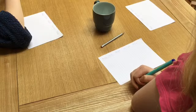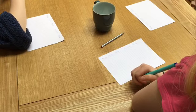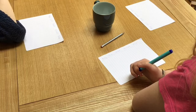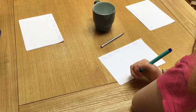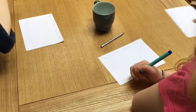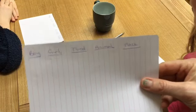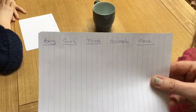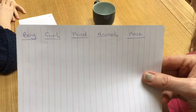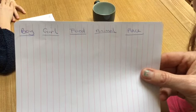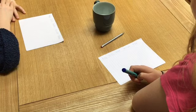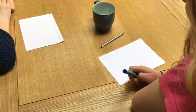This is a game called Stop the Bus which can be used to help develop phonological awareness at the phoneme level. It's a categories game and we have chosen five categories to use today: boys name, girls name, food, animal, and place. In the middle of the table I've got a cup with 26 bits of paper in it.